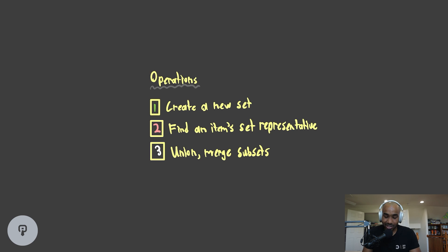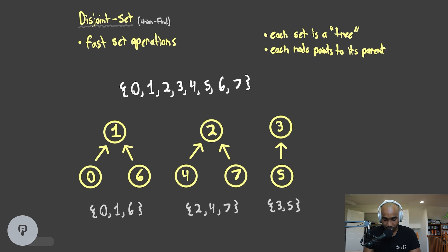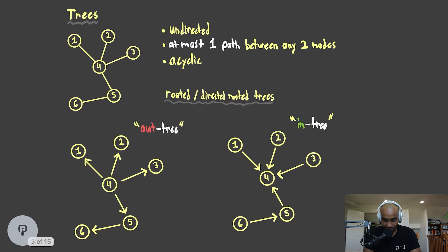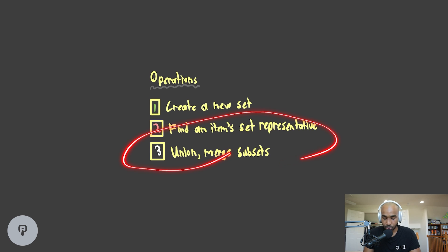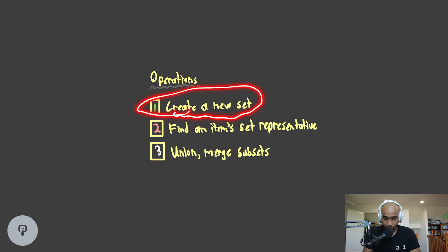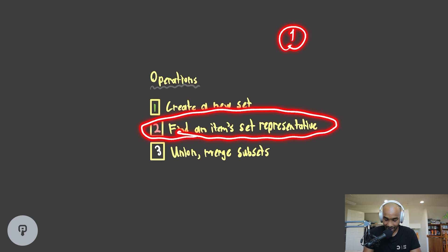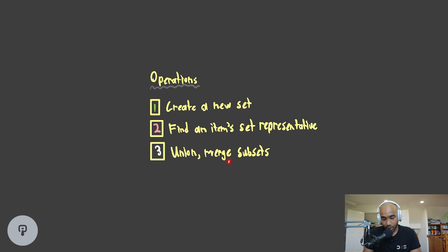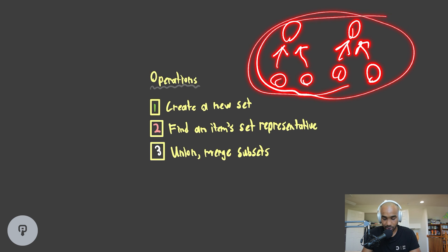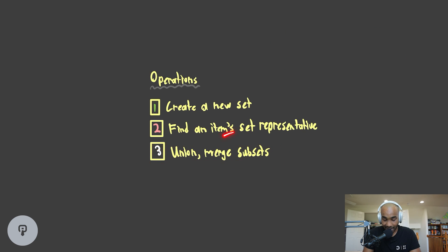So what are the operations? We're going to see what operations come with this disjoint set structure. The structure is a set where each subset is an inverted tree. We have three critical operations — the two most important are: we can create a new set with a single item (a new node X); we can find the representative of a subset, which is the root node; and we can union and merge subsets — taking two subset trees and merging them into a single subset.